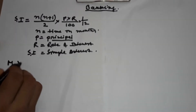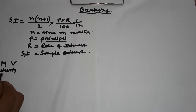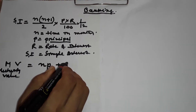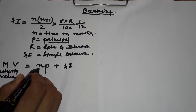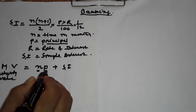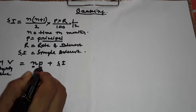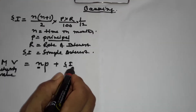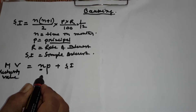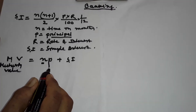Now, MV means maturity value. Maturity value equals n × P + SI, where n is time in months, P is the principal deposited every month, and SI is the simple interest. This is the formula to find the maturity value.